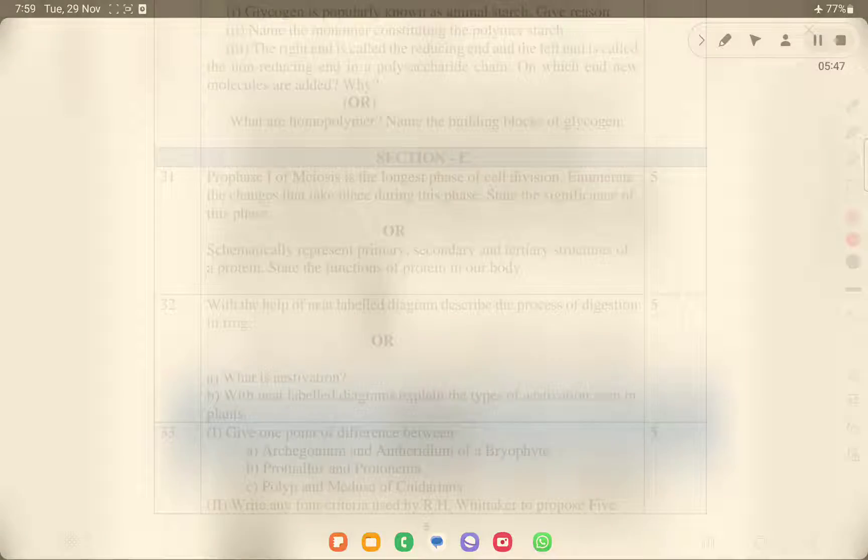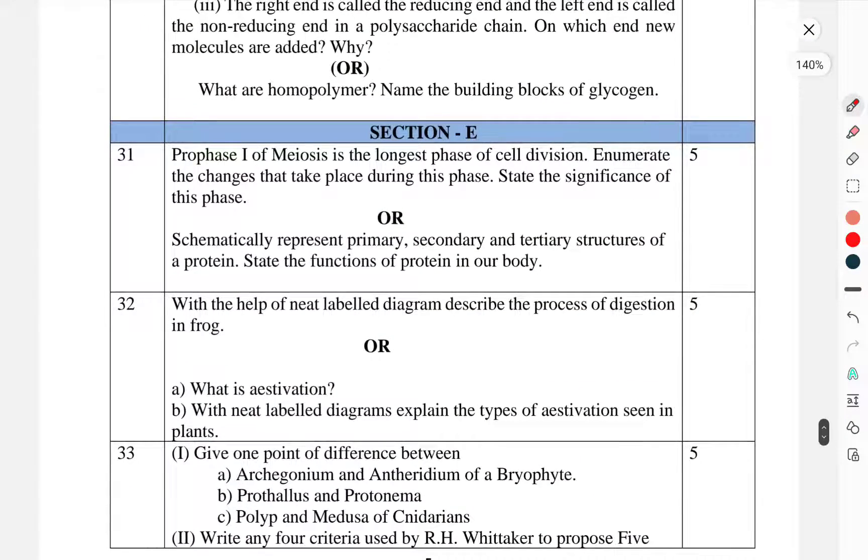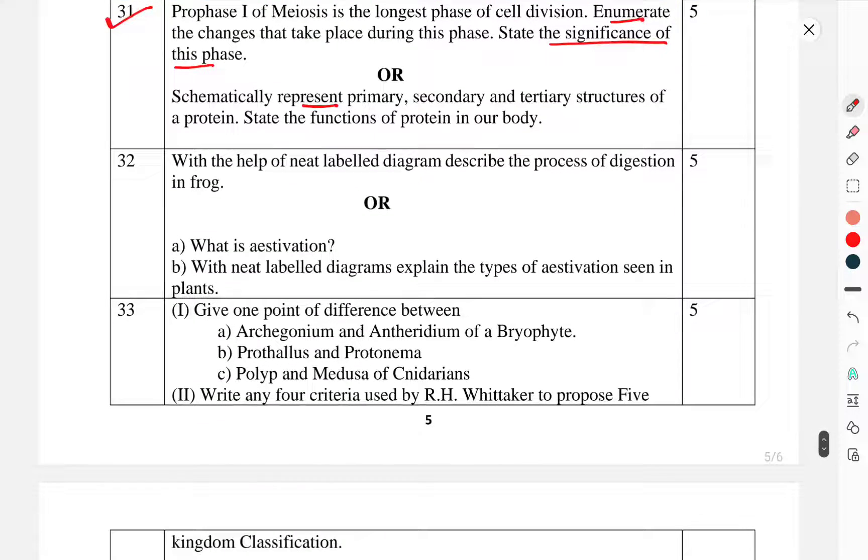Now we have come to Section E. Question 31: Prophase 1 of meiosis is the longest phase of cell division. Enumerate the changes that take place during this phase. State the significance of this phase. Or, schematically represent the primary, secondary, and tertiary structures of the protein. State the function of protein in our body. Question 32: With the help of a neat labeled diagram, describe the process of digestion in frog. What is estivation?